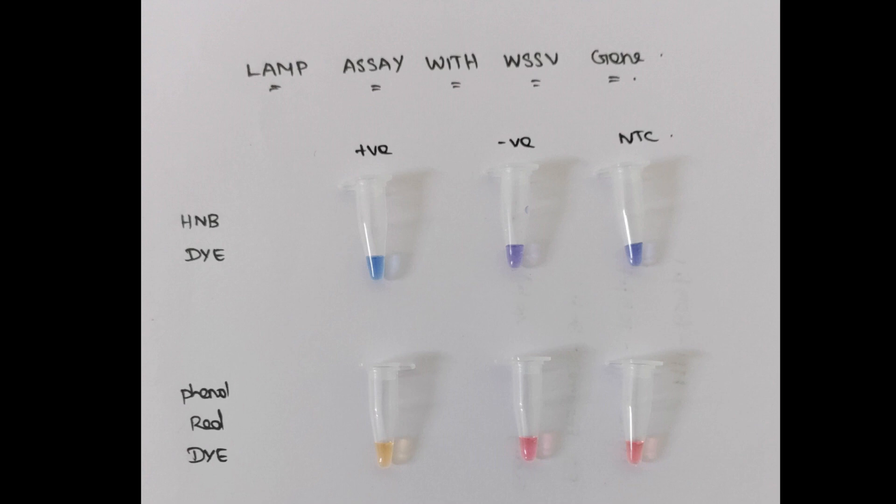In HNB dye based LAMP kit, positive sample turns to blue color, while the remaining two samples were in the same color of master mix.